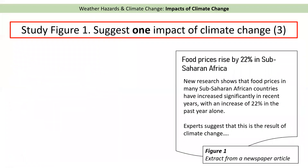Now on to an exam question. It says: 'Study Figure 1 — suggest one impact of climate change.' It's worth three marks. Because it's a 'suggest' question, we've been given something to look at and must refer to it in our first point. You refer to the source for your first mark, explain it for your second mark, and develop it for your third mark.